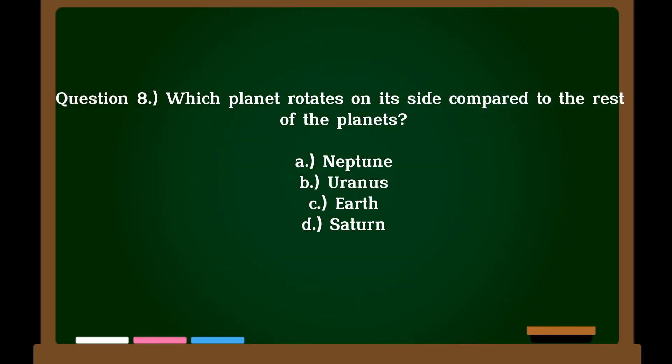Question 8. Which planet rotates on its side compared to the rest of the planets? A. Neptune, B. Uranus, C. Earth, D. Saturn. Correct answer: B. Uranus.